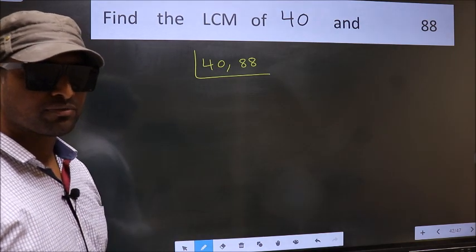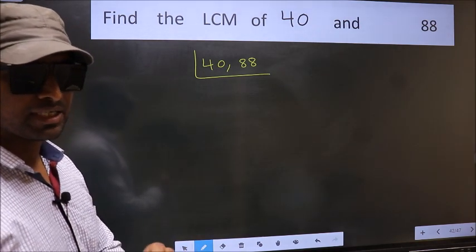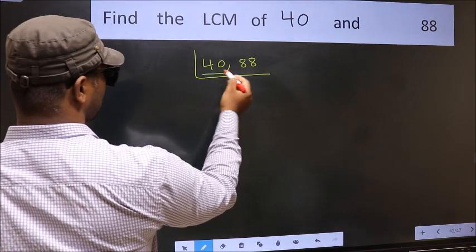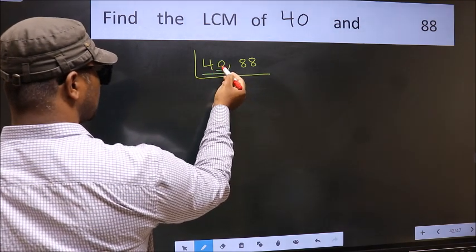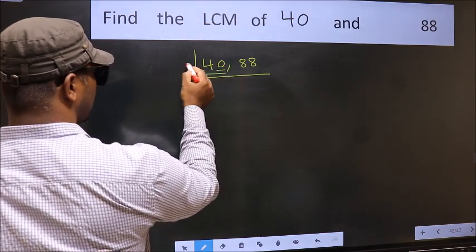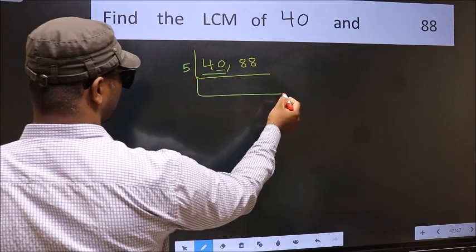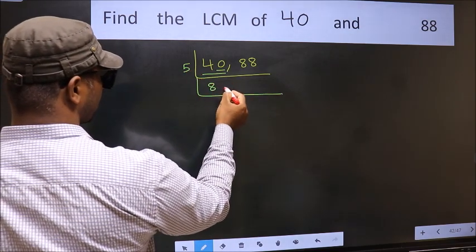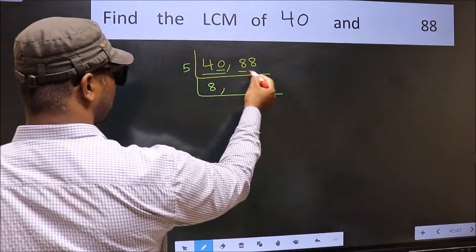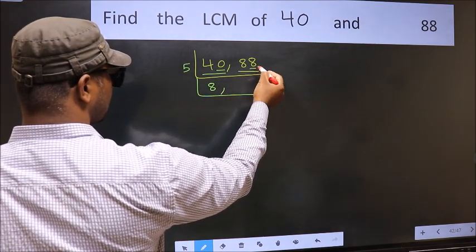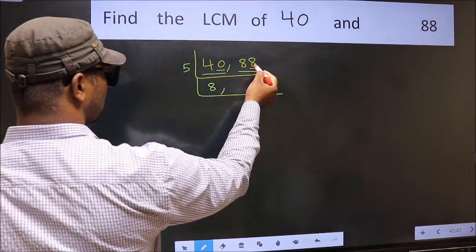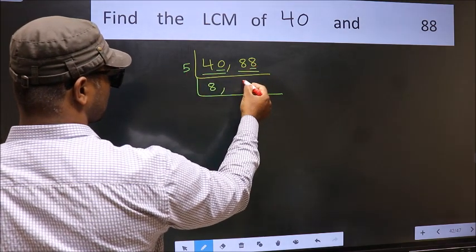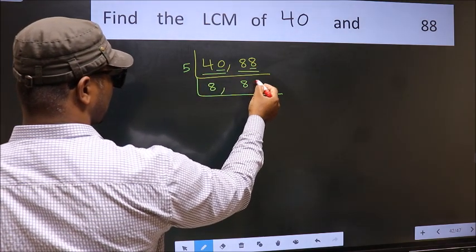Now you should focus on the first number which is 40. For this number, last digit is 0, so directly take 5. When do we get 40 in the 5 table? 5 eights are 40. The other number is 88. Last digit is neither 0 nor 5, so this is not divisible by 5. So we write it down as it is.